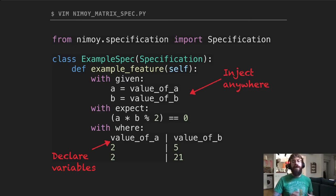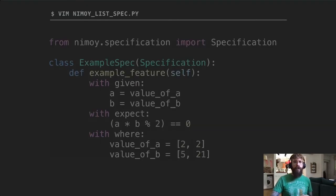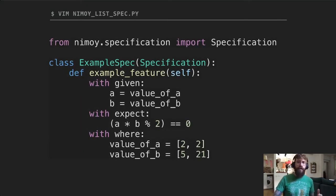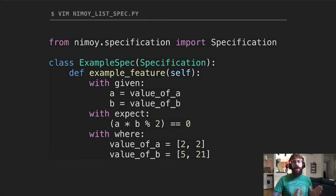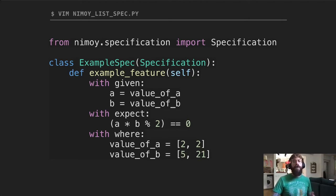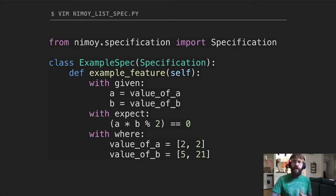Sometimes your data doesn't always fit into a table, so Nimoy has a solution for lists as well. You can write the exact same test case using lists instead of a table. In the where block, value_a and value_b are set as lists. Every iteration goes over the lists using corresponding indices — the first iteration uses index 0 (2 and 5), the second uses index 1 (2 and 21). It's exactly the same behavior, but you can describe your data in a different shape, making it more human-friendly.